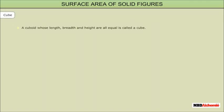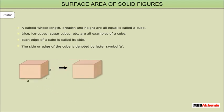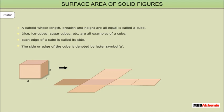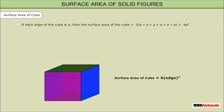Cube: A cuboid whose length, breadth, and height are all equal is called a cube. Dice, ice cubes, sugar cubes, etc. are all examples of a cube. Each edge of a cube is called its side, denoted by the letter A. In the animation, when a cube is disassembled, it gives 6 square pieces. Surface area of a cube: if each edge of the cube is A, then the surface area of the cube is 6A².